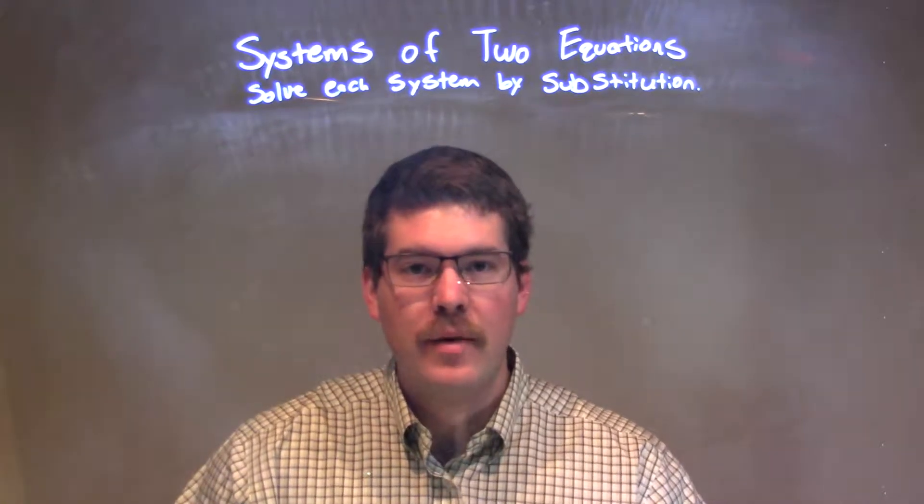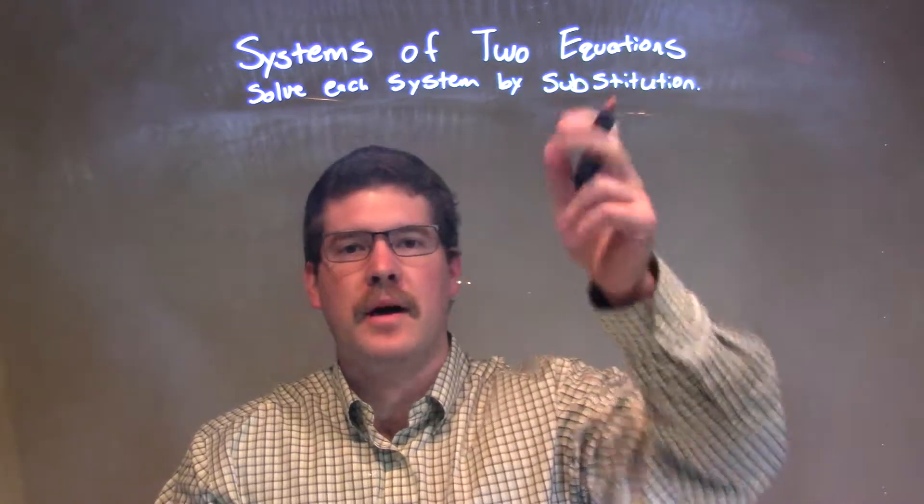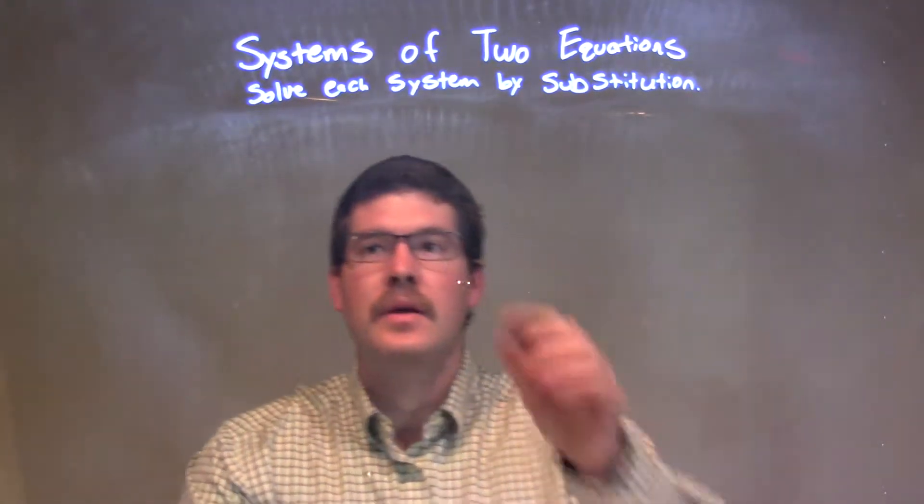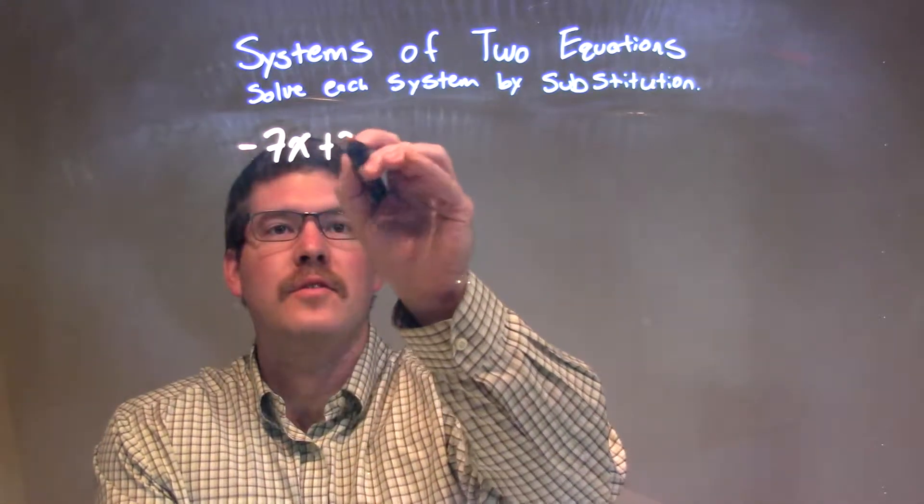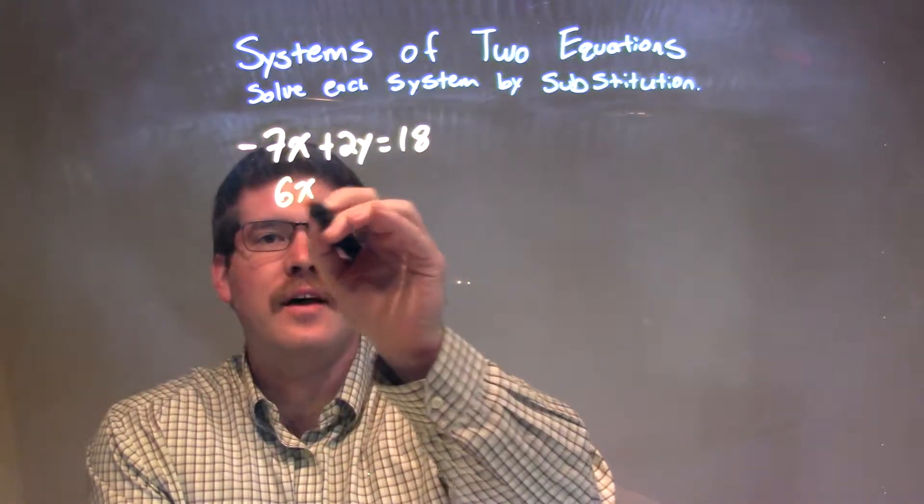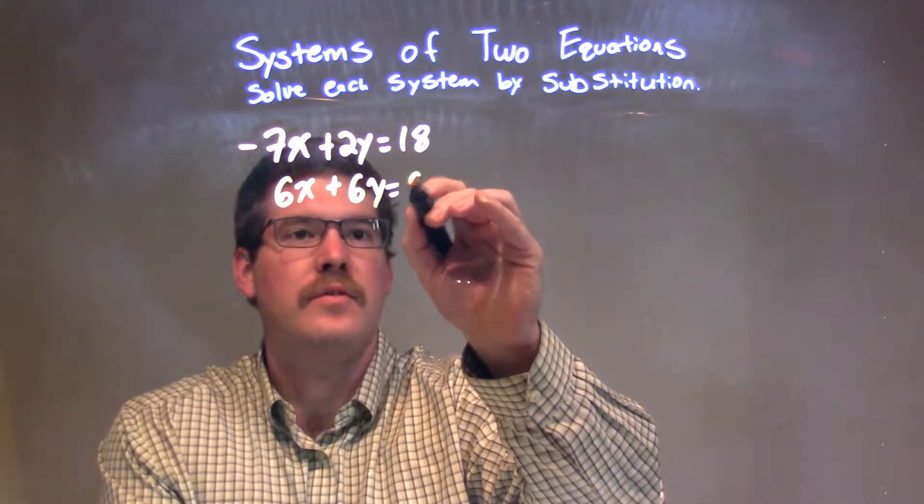Hi, I'm Sean again, and this is MinuteMath. Today we're going to learn about systems of two equations, and we're going to solve each system by substitution. So, I was given this system of equations: negative 7x plus 2y equals 18, and 6x plus 6y equals 0.